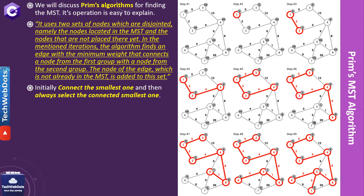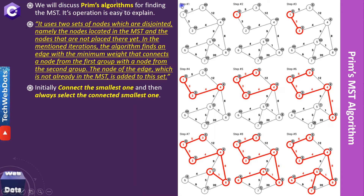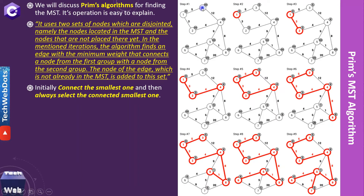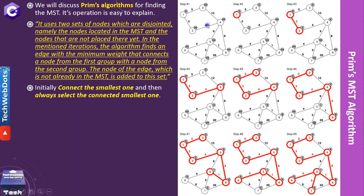The node of the edge which is not already in the MST is added to the set. In simple words: initially connect the smallest one, and then always select the connected smallest one. In step one, there is node 1. If we start from node 1, we are considering the first node and there are two possible nodes connected with it: node 3 and node 2. Node 2 has the lower weight of 3, so the path will be 1 to 2.